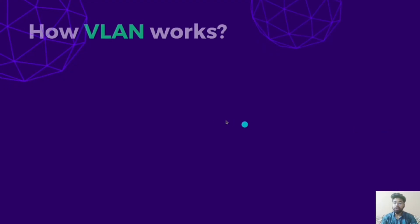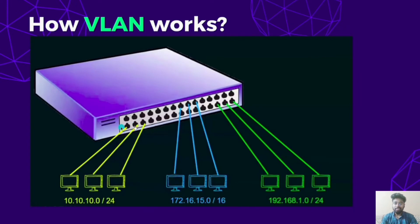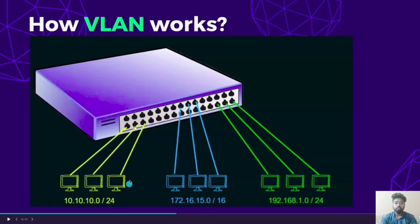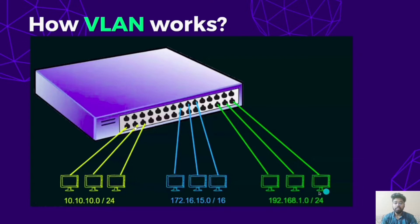Now let's see how VLAN actually works. In this scenario, we are going to create 3 virtual LANs: the yellow VLAN, the blue VLAN, and the green VLAN, each with their respective ports. The yellow VLAN devices have the IP address scheme 10.10.10.0, the blue VLAN devices have the IP address scheme 172.16.15.0, and the green VLAN devices have the IP address scheme 192.168.1.0.